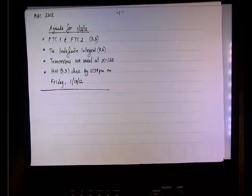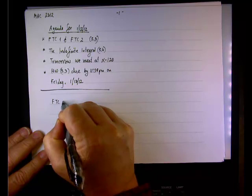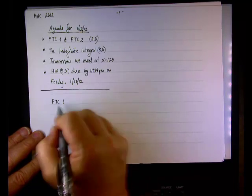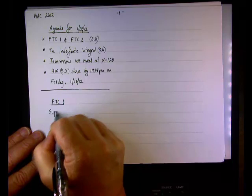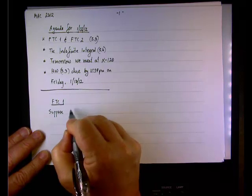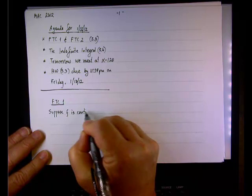I'll start with the theorem. So, the fundamental theorem of calculus part 1. Suppose we have a function, we call it f, is continuous on the closed interval from a to b.